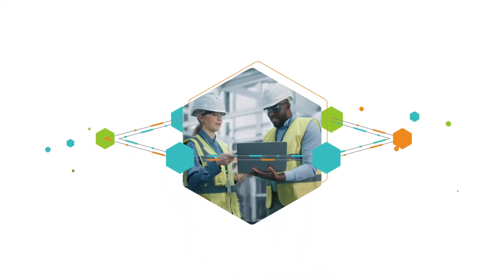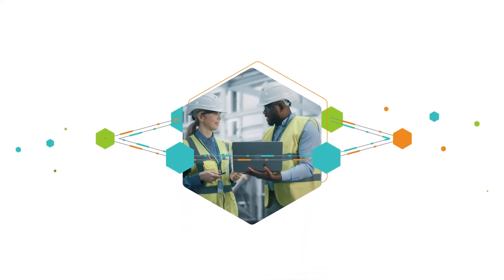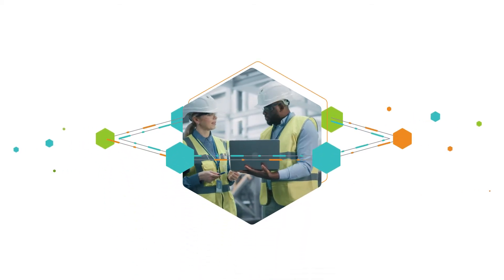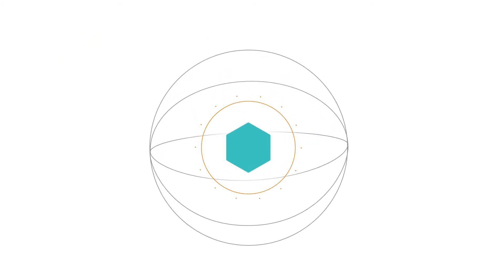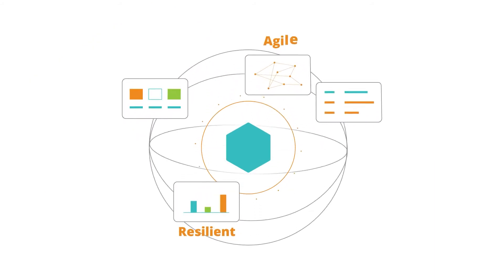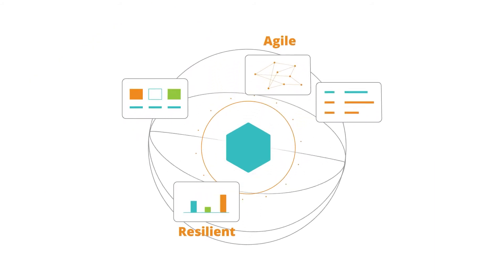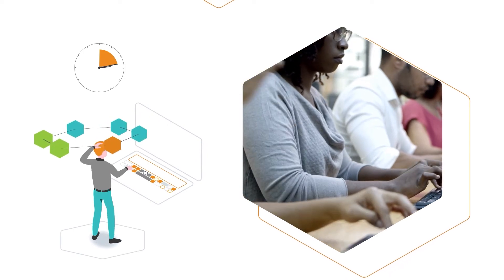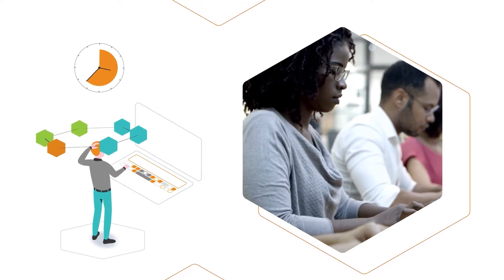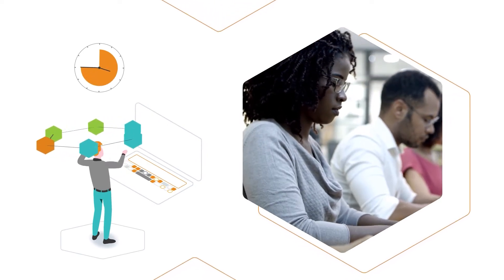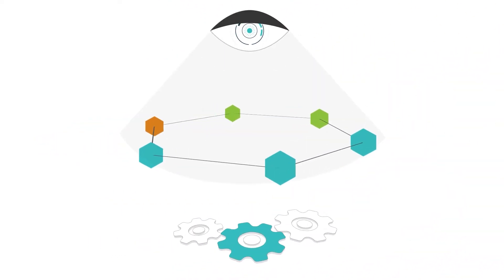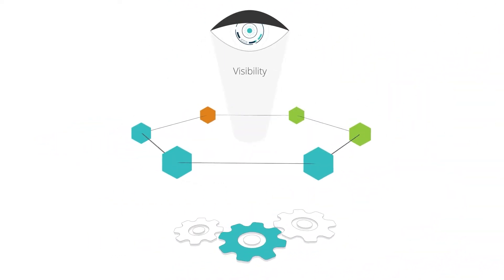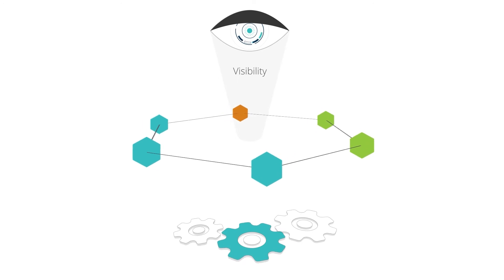Supply chain execution is increasingly complicated and uncertain, so organizations are innovating to make their processes more resilient and agile. Today's disconnected systems cause delays for customers by increasing manual data input and errors. All this slows down operations, reduces visibility and increases risk.